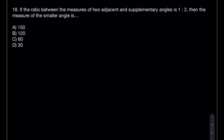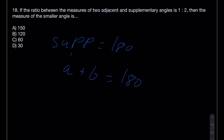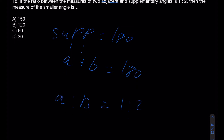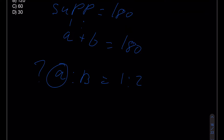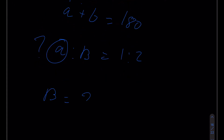You can disregard 'adjacent' here — what matters is 'supplementary.' Whenever you hear supplementary, think of 180. It means two angles that add up to 180 degrees. The ratio of a to b is 1 to 2, so b is double a.